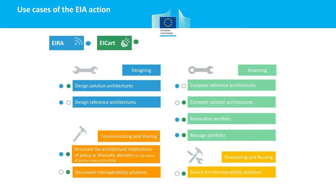In this slide we present the use cases of the EIA action, grouped according to the objectives. For the designing objective, the work products can be used to design solution architectures and reference architectures. For assessing, they can be used for comparing reference and solution architectures, and by portfolio managers to rationalize IT portfolios. For communication, the EIA and EIA cart can structure and communicate the architectural implications of a policy or thematic domain, and document interoperability solutions. Finally, the cartography can be used to search for existing interoperability solutions.